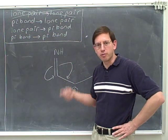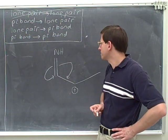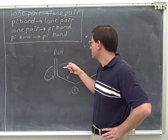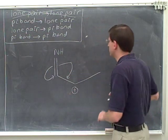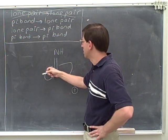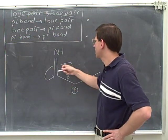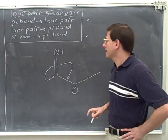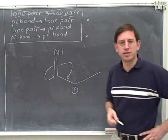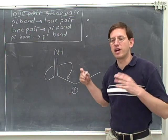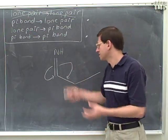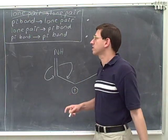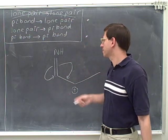The as close as possible rule is only for when you're comparing two arrows of the same type. For example, this is moving a pi bond into a lone pair, and this arrow is moving a pi bond into a pi bond. You can't compare arrows of different types using the as close as possible rule — that's not what it is for. So we can't tell which of these is better by asking which is closer.